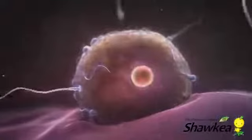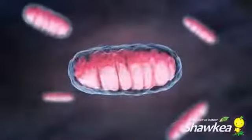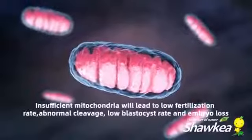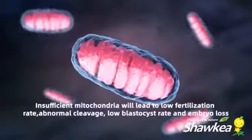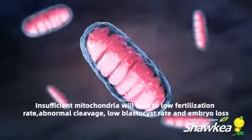Mitochondria do not replicate during early embryonic development after fertilization. If your oocyte has insufficient mitochondria, it will lead to low fertilization rates, abnormal cleavage, low blastocyst rates, and embryo loss.